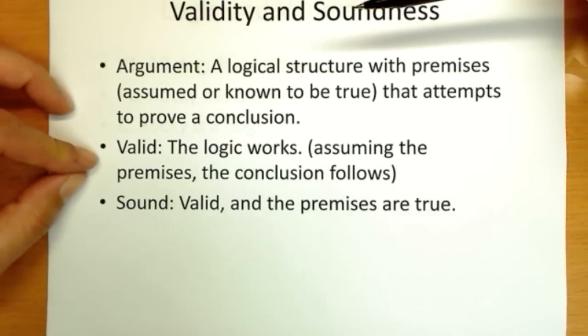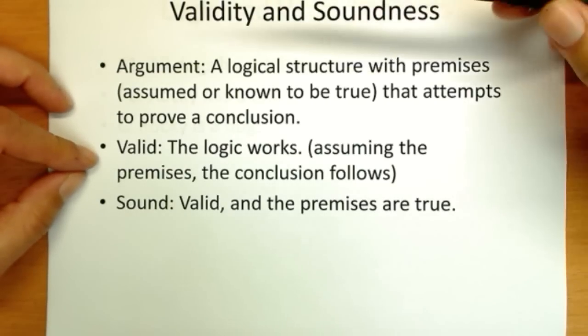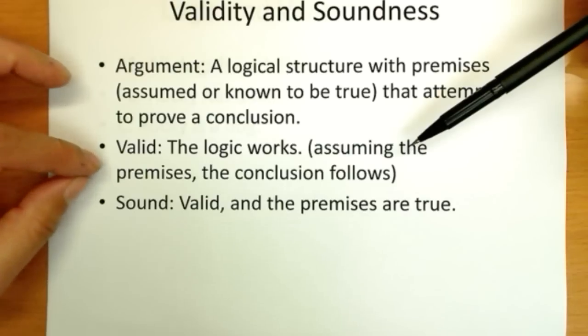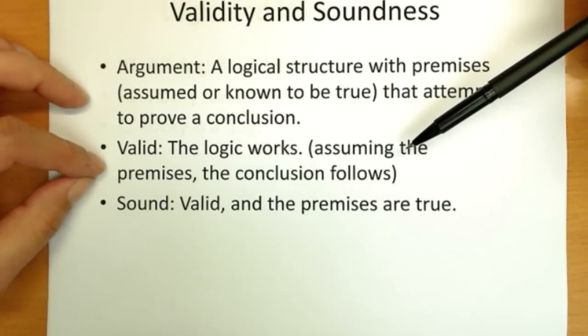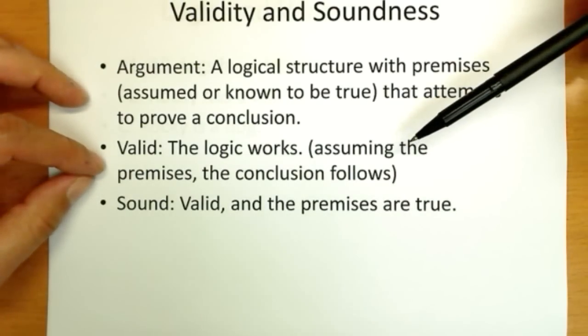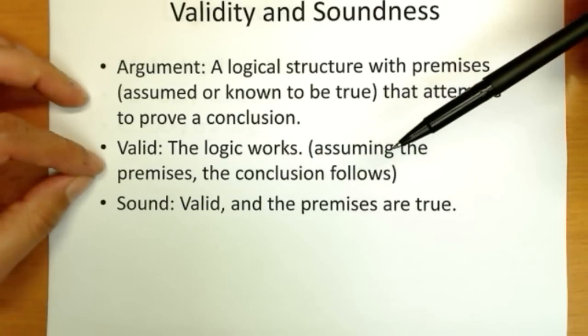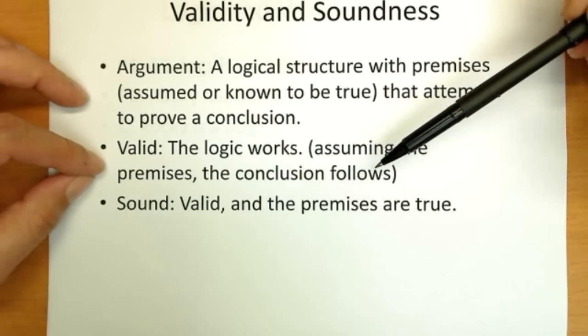One, is the argument valid? And that means, does the logic work? If you start with the premises and you assume they're true, does the conclusion follow? So notice you can't argue with the premises at valid. You can't say that argument's not valid because premise one is wrong. That wouldn't make sense because we're going to assume the premises are true. So we can't very well argue with them and assume them at the same time.